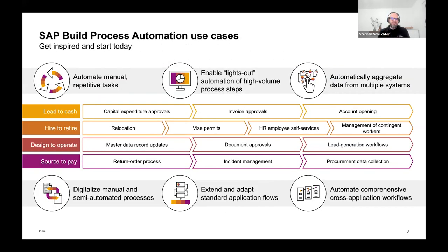When we talk about use cases where SAP Build Process Automation can be used in your organization, we are not bound to any particular line of business or industry — you can use it each and everywhere. This gives you the freedom to extend processes, automate parts of a process, digitalize previously manual processes, and extend processes in different areas like Lead to Cash, Hire to Retire, or Source to Pay.